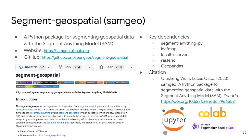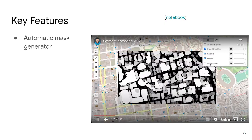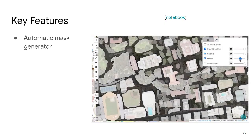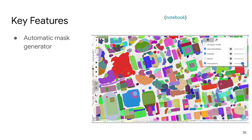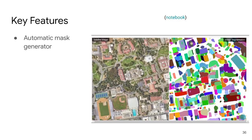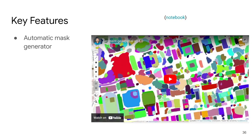The other package I want to highlight is called segment-geospatial. The source code is available on GitHub, and it's built on top of the Segment Anything Model (SAM), which was released about a year ago in April. It has become very popular across a variety of disciplines including geospatial. I built on top of SAM to provide functionality that allows users to segment geospatial data, satellite data, and high-resolution imagery very easily. For example, given a satellite image, you can do automatic segmentation — no additional training needed — and it provides three output options so you can pick the most suitable one for your application.